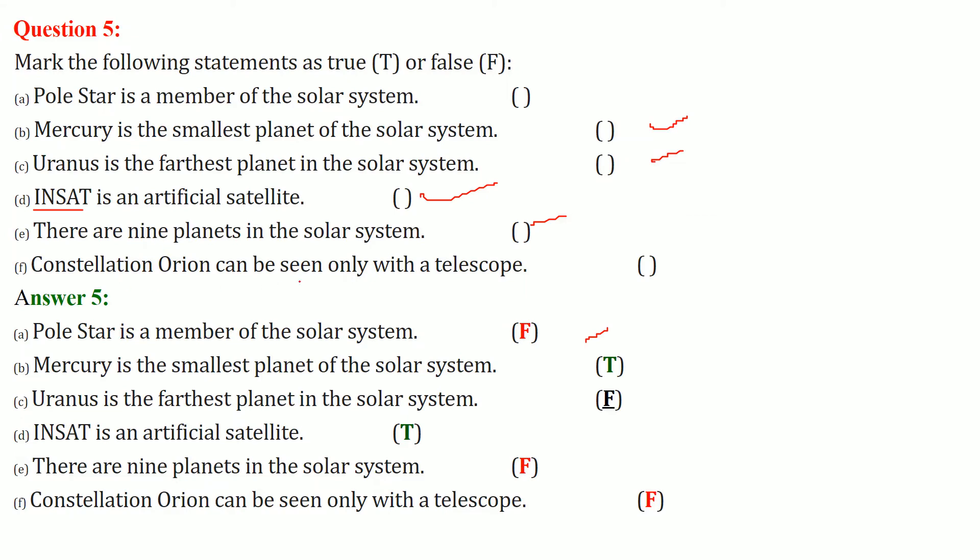Constellation Orion can be seen only with a telescope - this is false. Why? Because this is a constellation. It has a proper pattern, so it's easily visible.